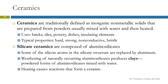There are different types of ceramics. Silicate ceramics are composed of aluminosilicates — so you've got the silicate structure, but some of the silicon atoms have been replaced with aluminum atoms. Naturally occurring aluminosilicates, as they weather, will produce clays.